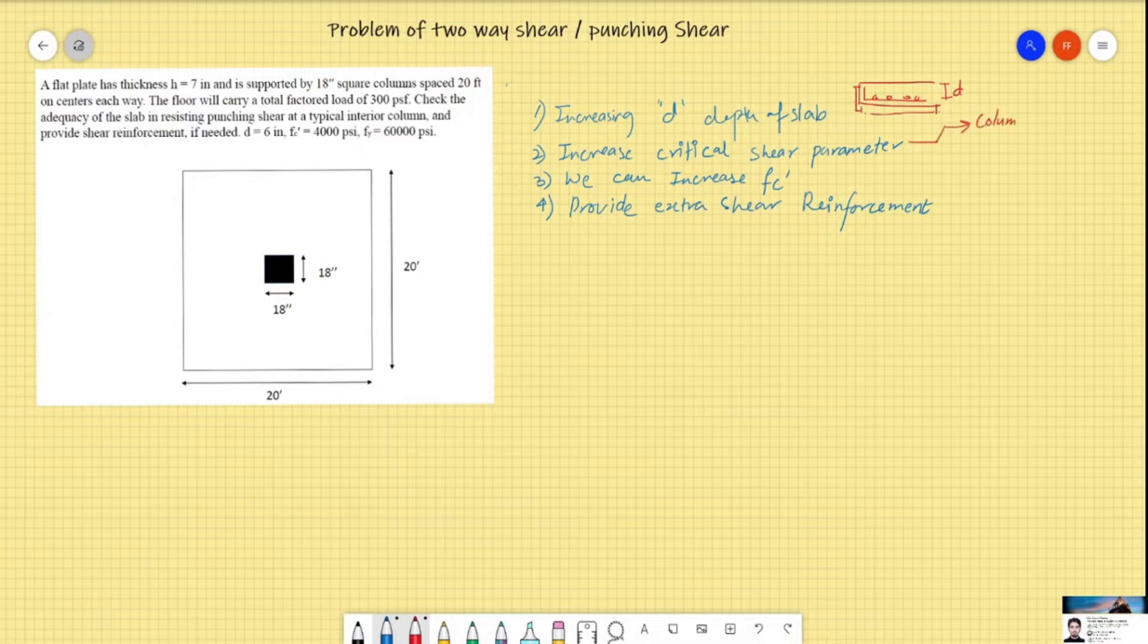And to increase the fc prime, we can use additives and high-strength concrete. However, for the extra shear reinforcement, there are different types like bent-up bars or bend bars.